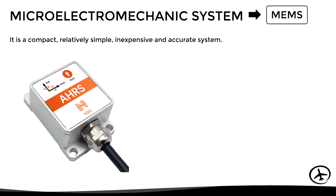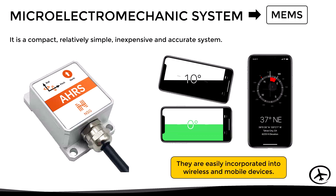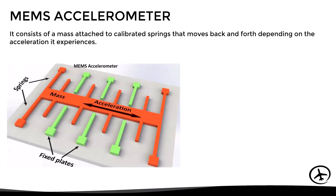MEMS sensors are easily incorporated into wireless and mobile devices — for example, to provide the compass or inclinometer functions of some smartphones. A MEMS accelerometer consists of a mass attached to calibrated springs that moves back and forth depending on the acceleration it experiences. The displacement of the mass can be measured and interpreted as a measure of acceleration.